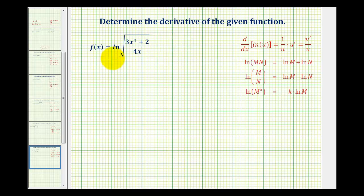To find the derivative of the given natural log function in its current form, we'd have to apply the chain rule where u, the inner function, would be the square root of a quotient. Therefore, determining u prime would be pretty involved.